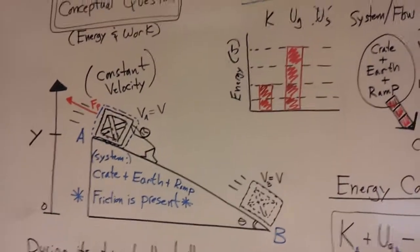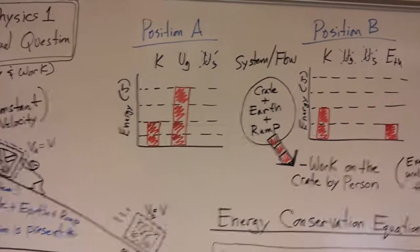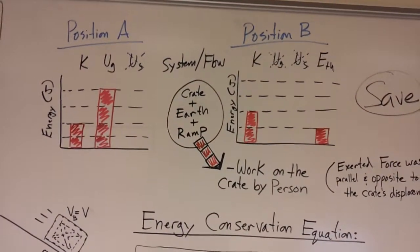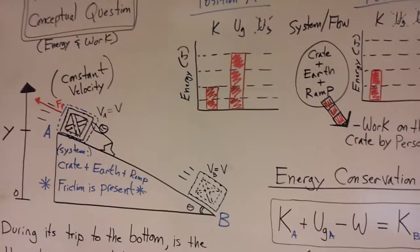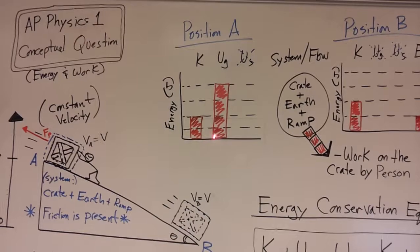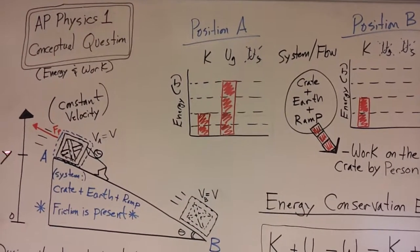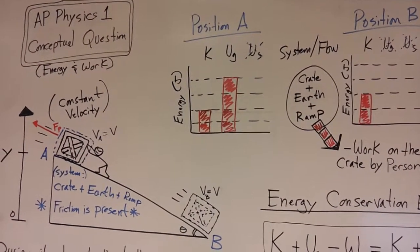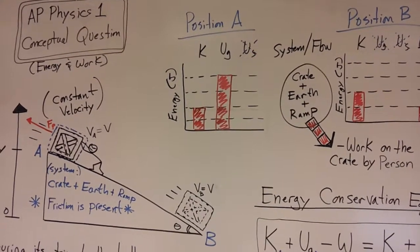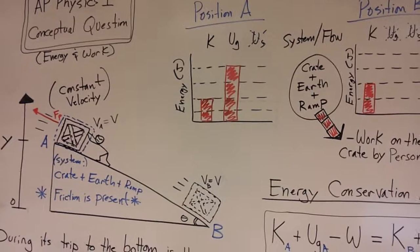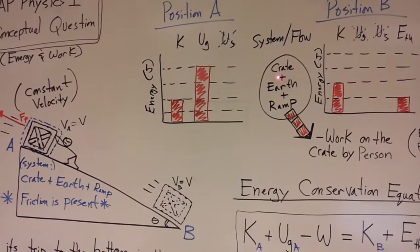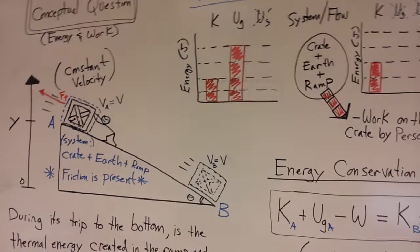Well, let's look at this situation and try to make an energy bar graph to help us think about what's going on. So, in the very beginning, there's kinetic energy because the box is moving, and there's some gravitational energy because it's at some vertical height Y. There's no spring potential energy because there's no compressed or stretched springs or deformed material. And we're going to define our system as the crate, the earth, and the ramp.